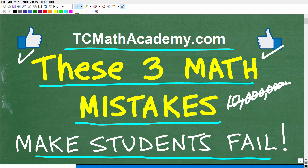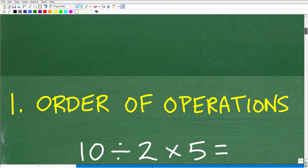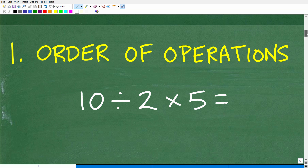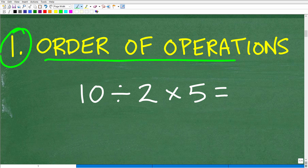So take note — if you fix these things, they're going to go much smoother for you in mathematics. Let's get to it. We'll start off with our first mistake area, and that is the order of operations.